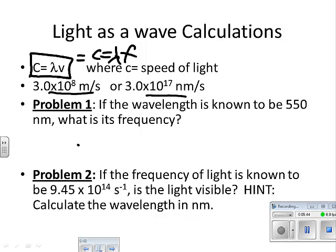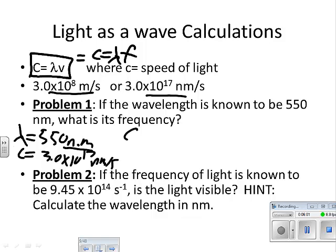Let's look at this problem. You have a wavelength that's known to be 550 nanometers. What is this frequency? Well, we're given lambda in nanometers, so we're going to use 3.0 times 10 to the seventeenth nanometers per second. So here's our equation, lambda V.